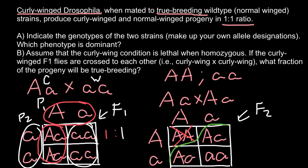Of the remaining viable progeny, what fraction will be true breeding? True breeding requires homozygous dominant or homozygous recessive. Homozygous dominant (AA) is lethal, so only homozygous recessive (aa) is true breeding. That gives us one out of three viable progeny — 1/3 — as the answer to question B.